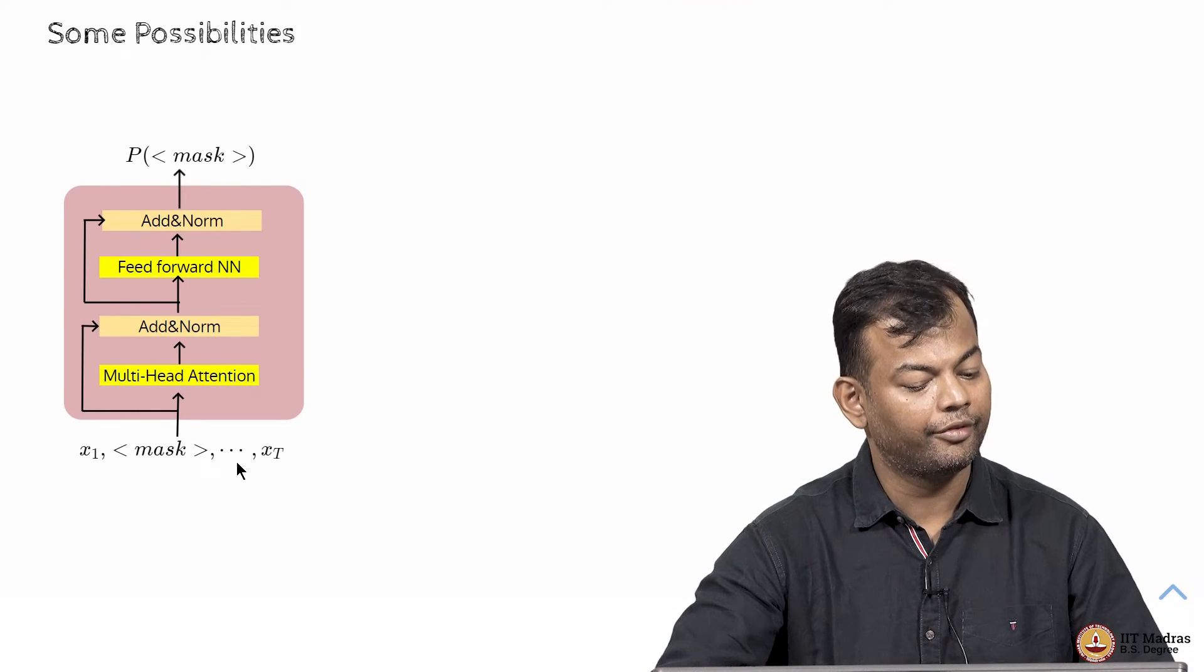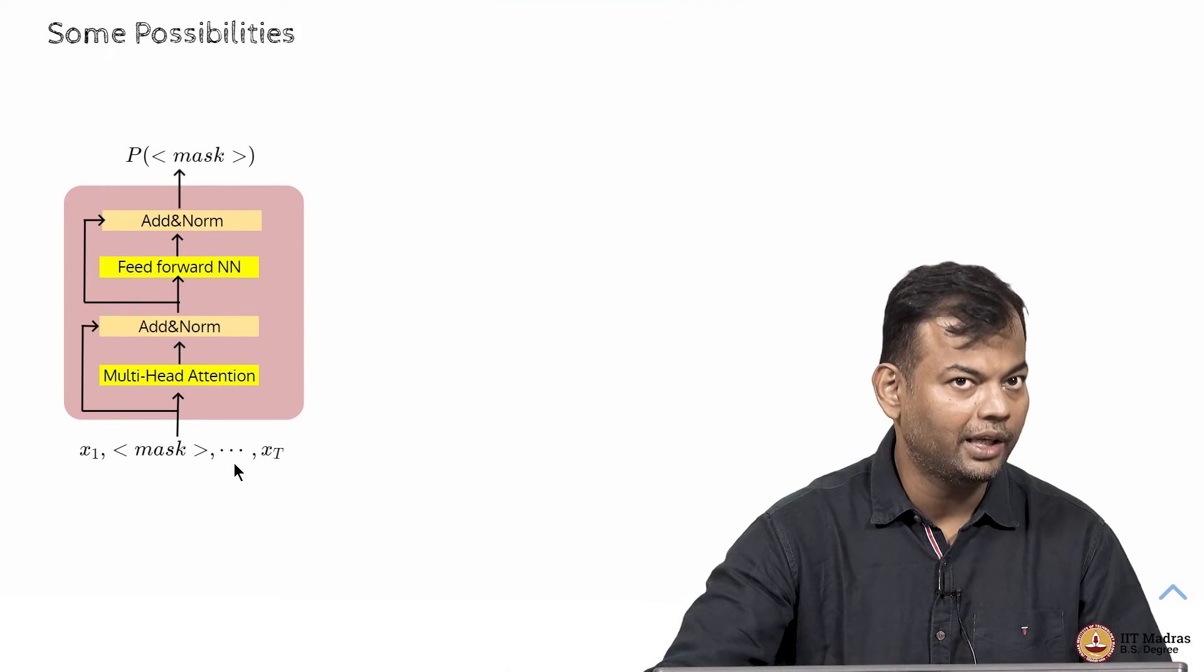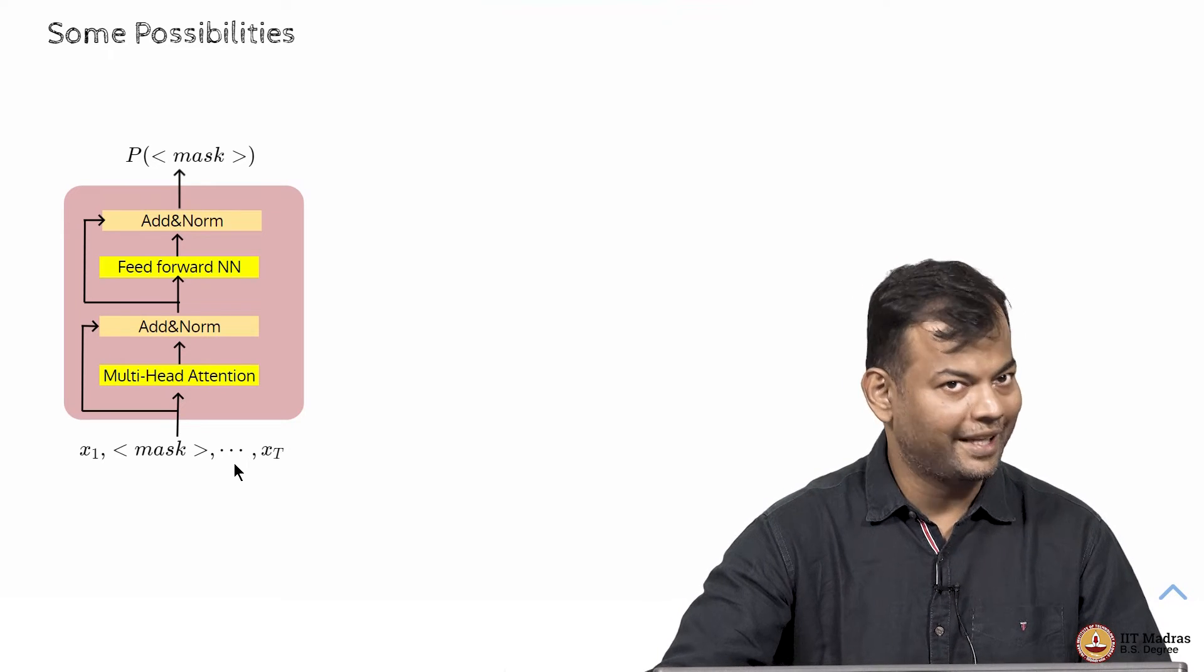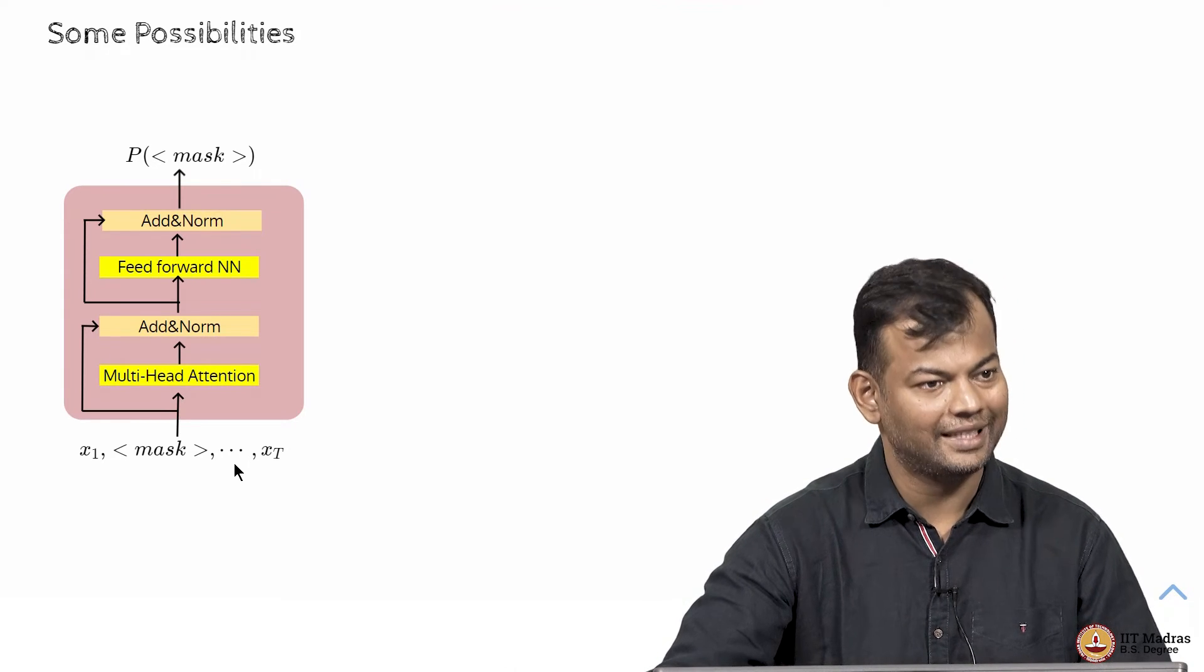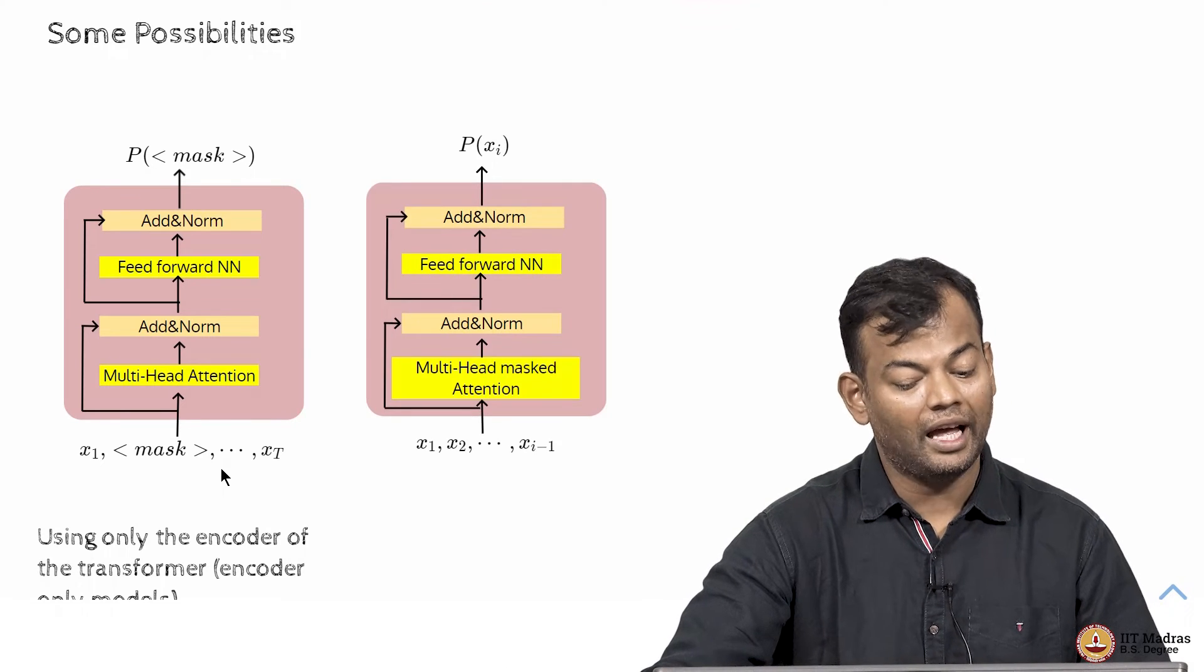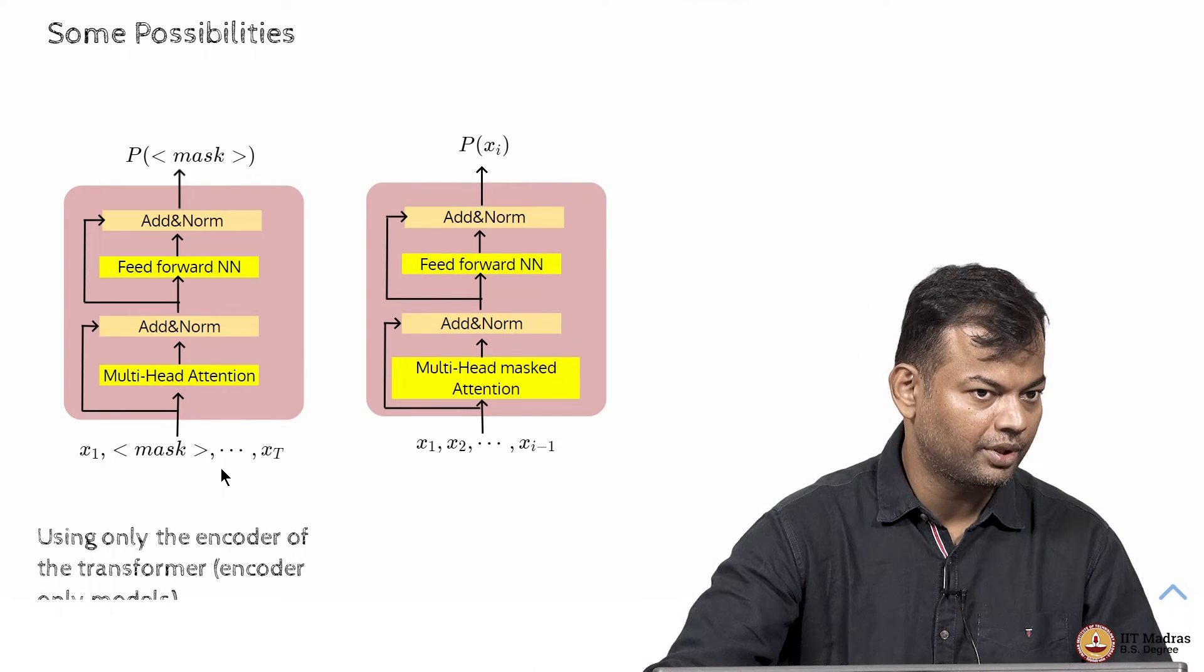Now, what are the possibilities? You could have an encoder only transformer. Okay? We have not seen encoder only models yet. So, when we see that you will understand what we mean by encoder. We could have decoder only transformers.